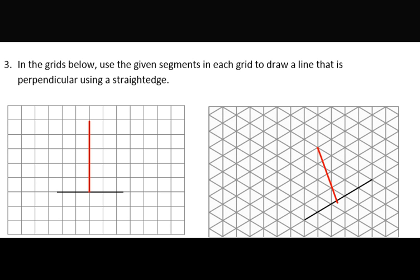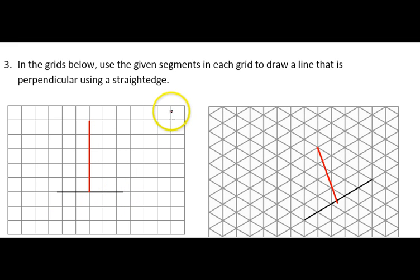In the next section, I was given two grids, and each grid had a black line segment drawn on it. And I needed to draw a line that was perpendicular to the line segment. So the first grid was pretty easy to do. I could just follow one of those lines because they make perpendicular lines by themselves.